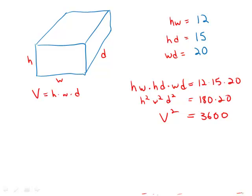Now all we have to do is take a square root, and of course the square root of 3600 is 60. And that is the volume, answer choice A.